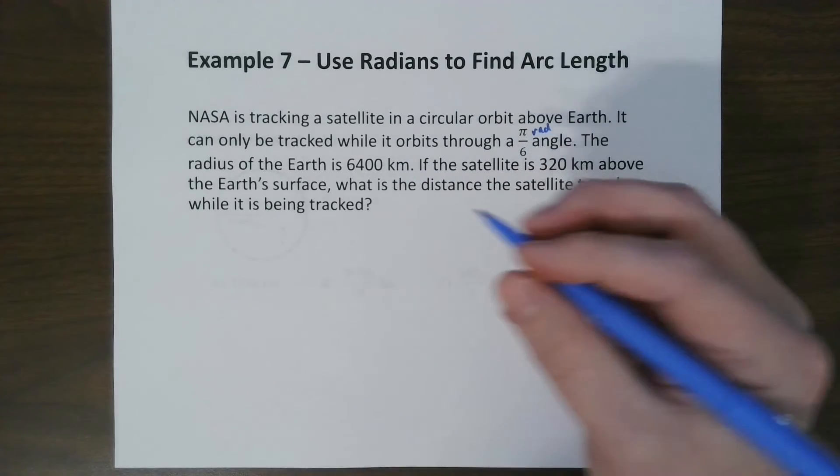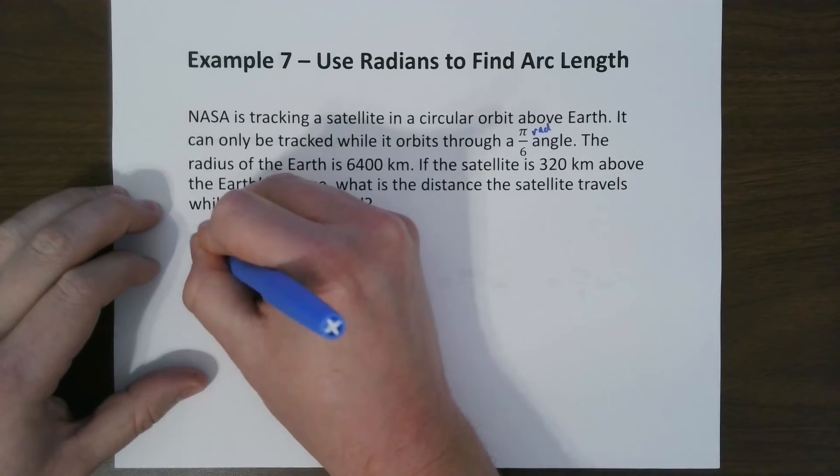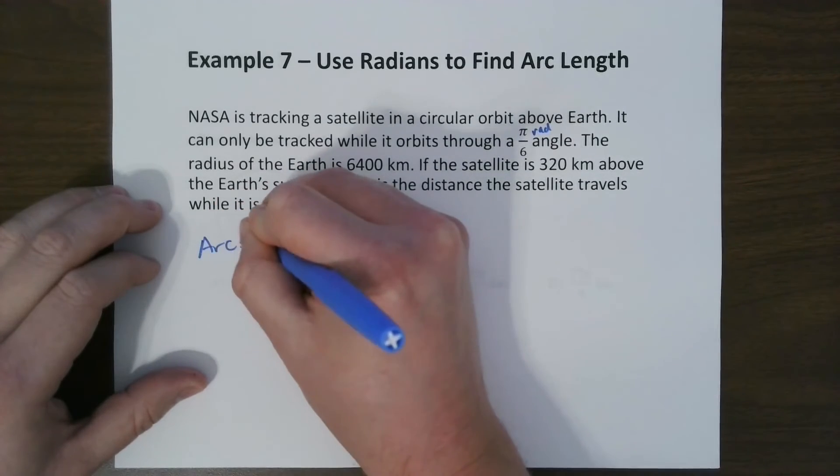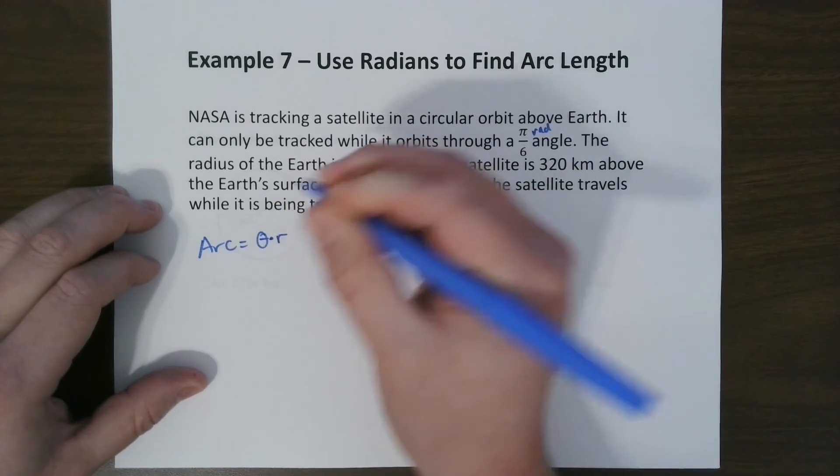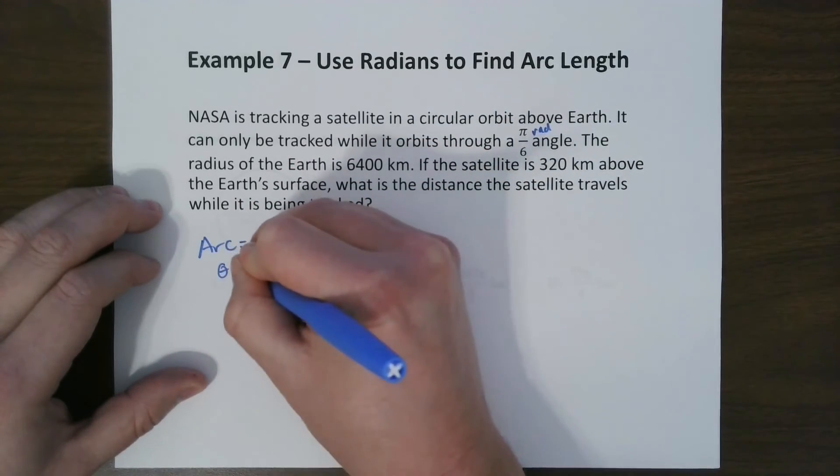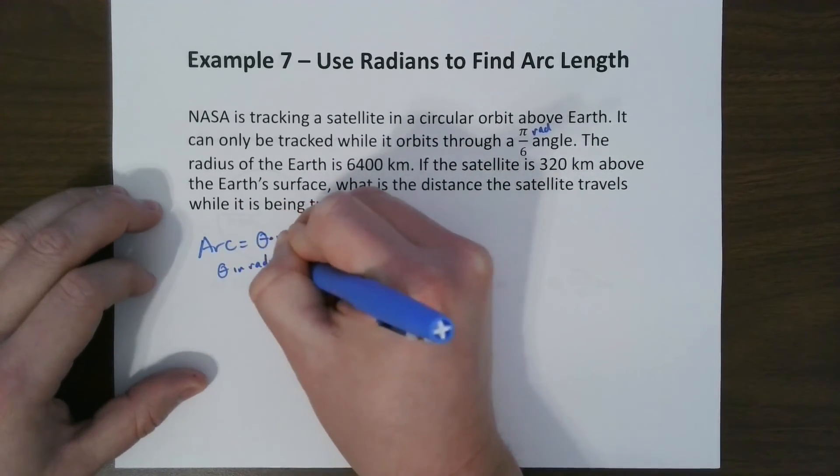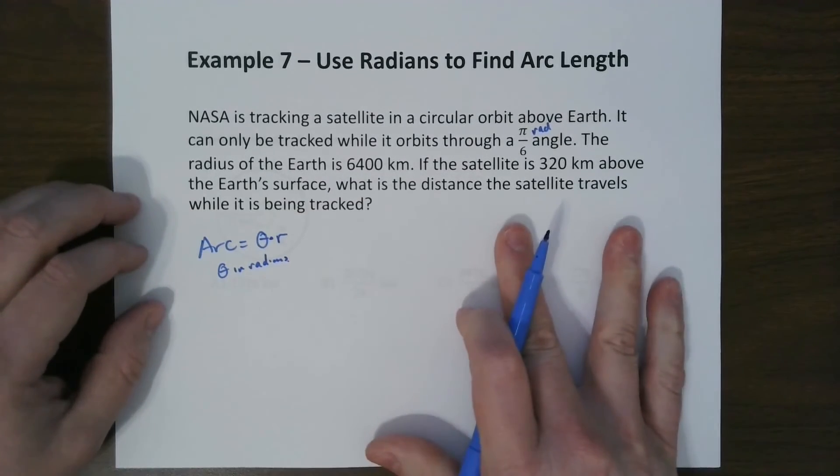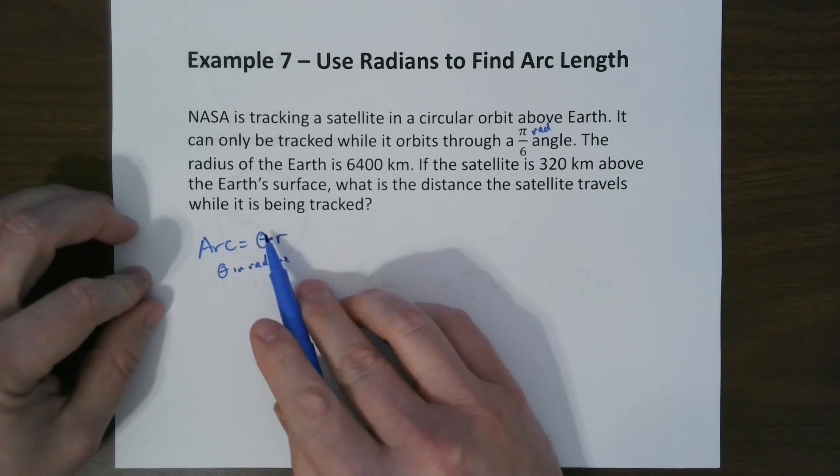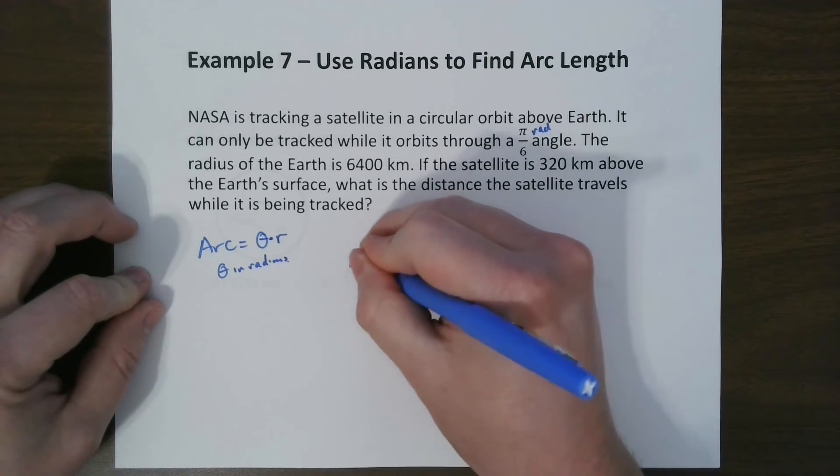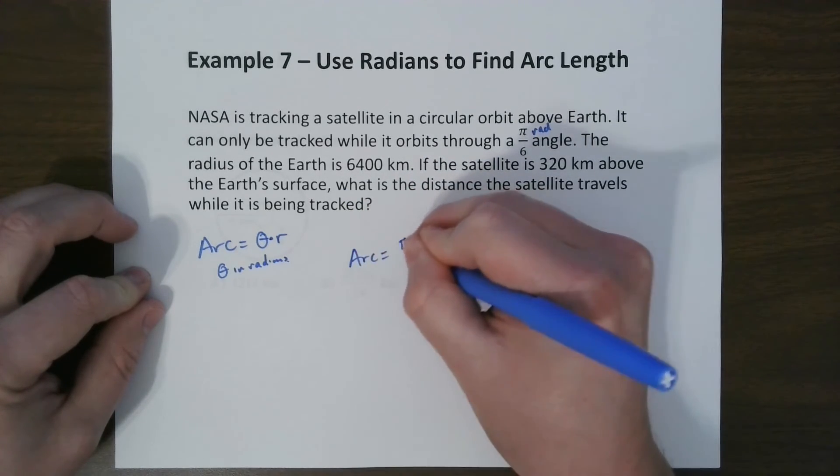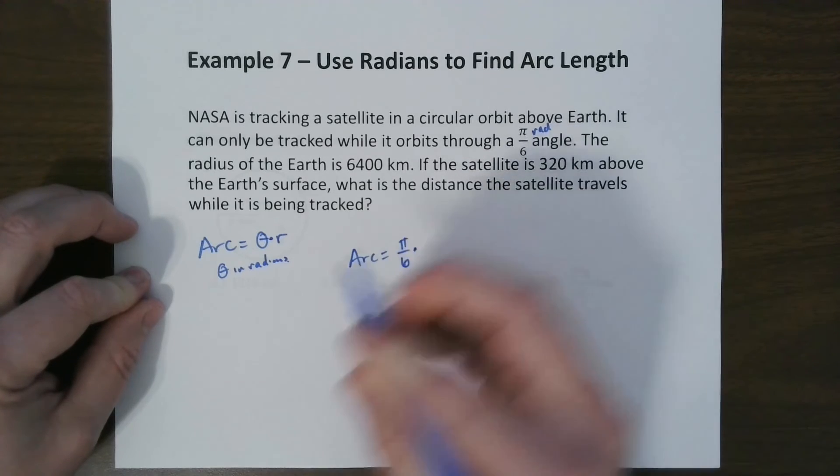So the arc length formula is theta times r, where theta is in radians. So all we have to do to find this problem is find out what theta is, which is given. It's pi over 6. And then we times that by the radius.